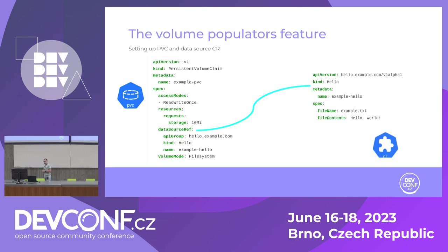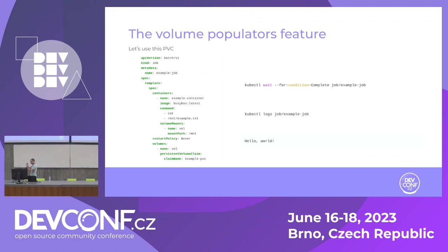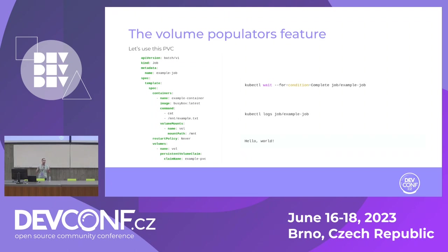We can see that custom resource on the right-hand side of the slide. In its spec section there are two fields: the file name set to 'example.txt' and file contents containing 'hello world'. When we try to use this PVC — for example with the job on the left-hand side that uses the example PVC and runs a container that dumps the data of the example.txt file — once the job is completed and we look at its logs, we see the content from the CR spec: 'hello world'. That's the functional view of what it does.